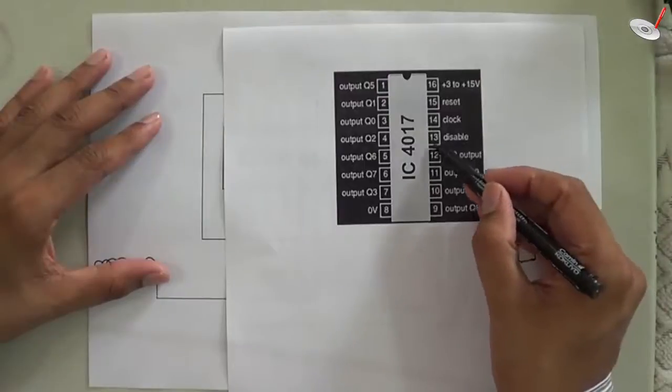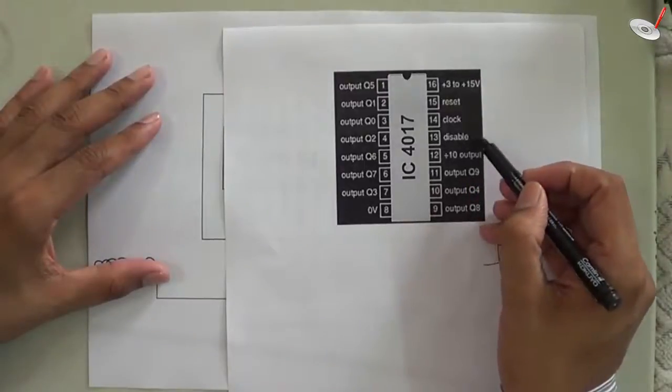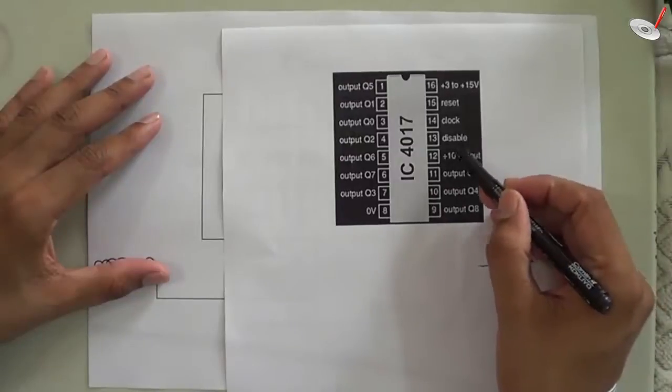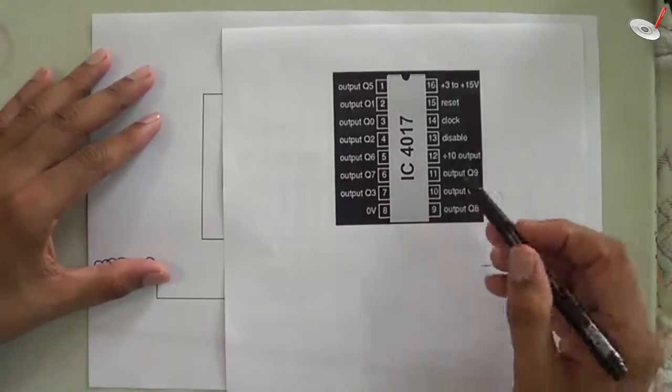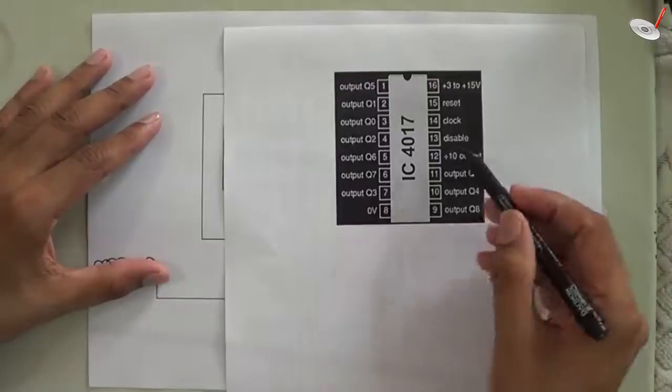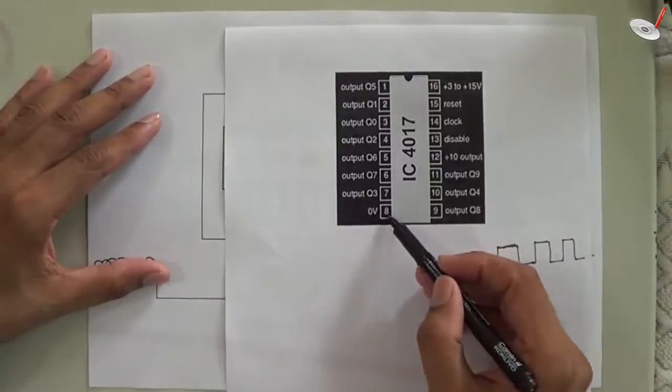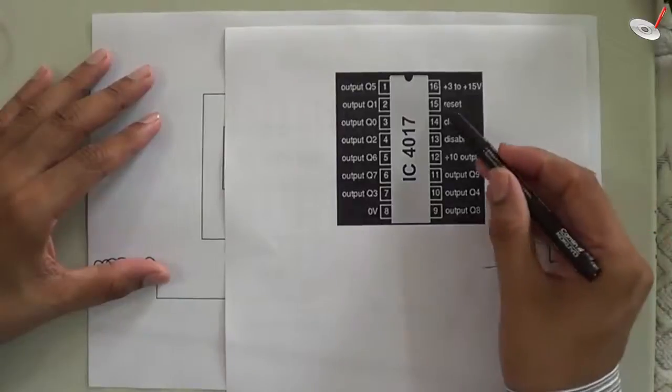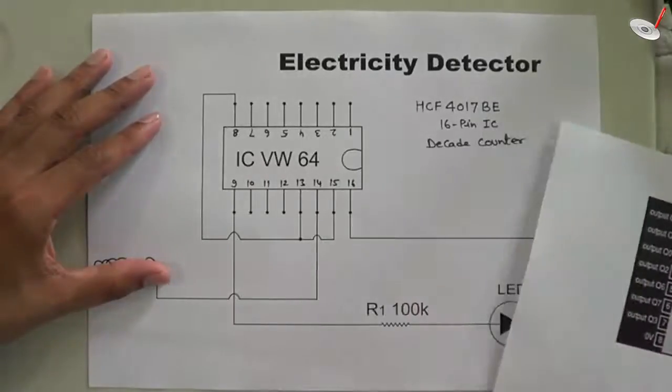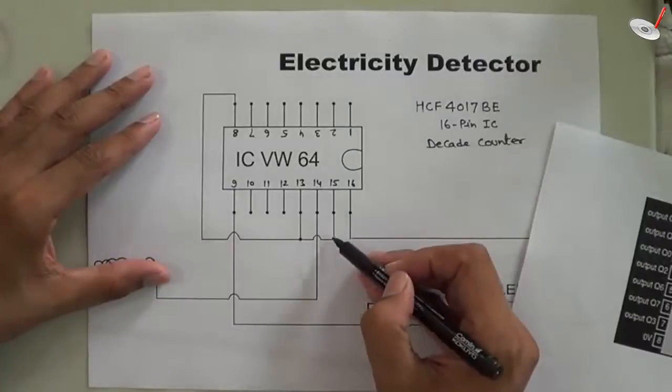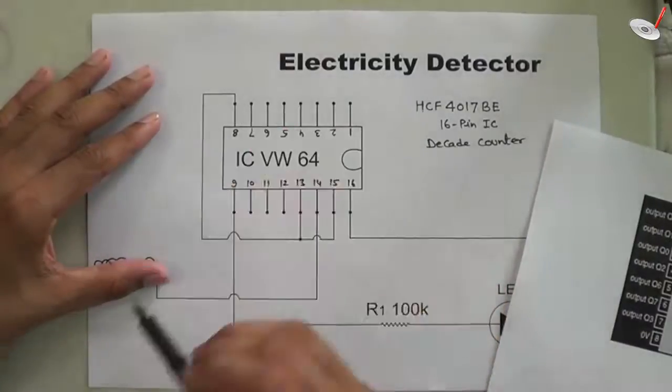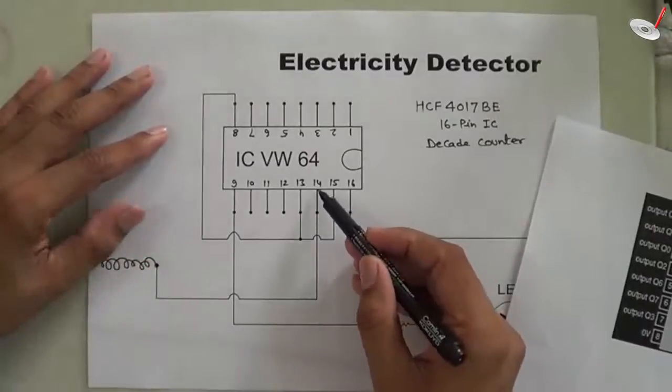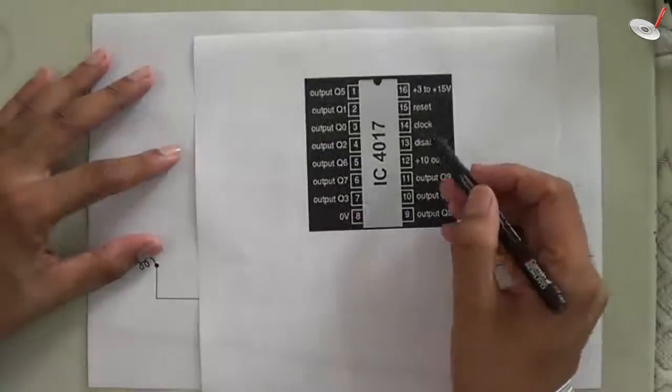number 8 that offers 0 volt. So we have connected these two pins to the ground. You can see pin numbers 13 and 15 are connected to pin number 8, which is providing ground. After that, pin number 14 is for clock.